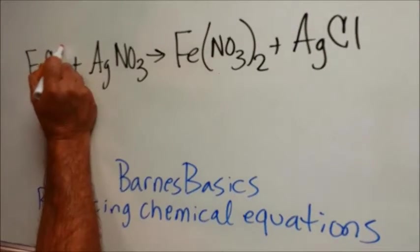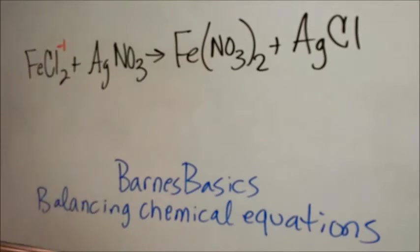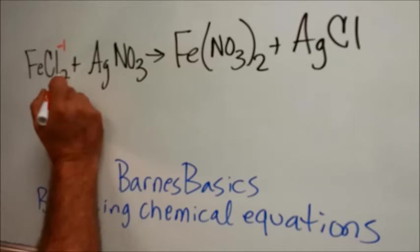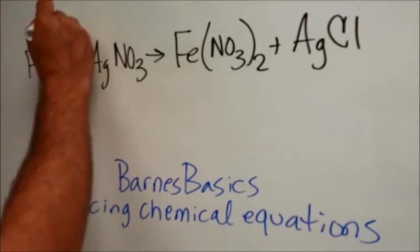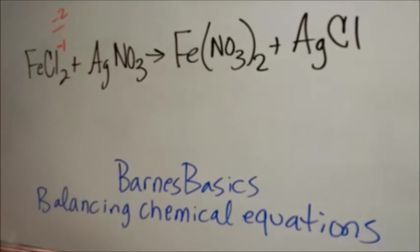Chlorine is going to just about always be minus 1 when it's by itself. If it's in a polyatomic, it'll have a different charge, but if it's by itself, it's minus 1 usually. Two times minus 1 is minus 2, so that means that this iron is a plus 2. If we wrote this out,